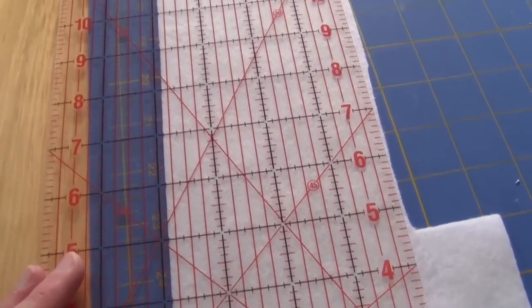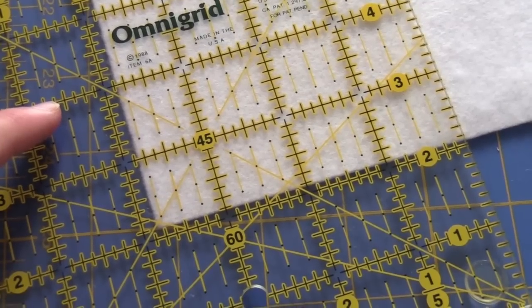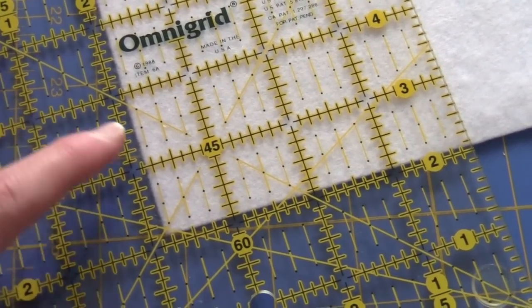So cut it into a line, a strip like you did the other one, and then you're going to cut the strip into squares and use the diagonal again, it's very helpful.